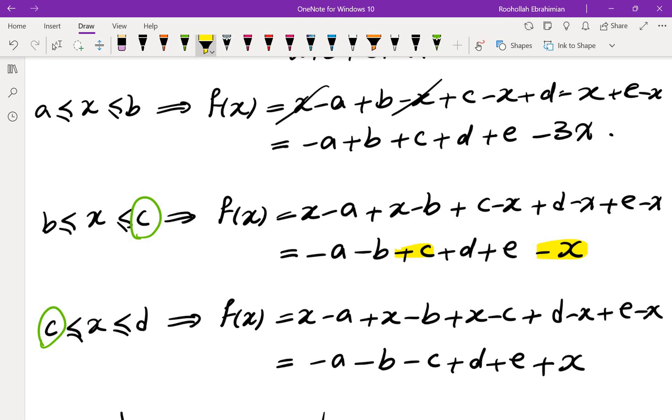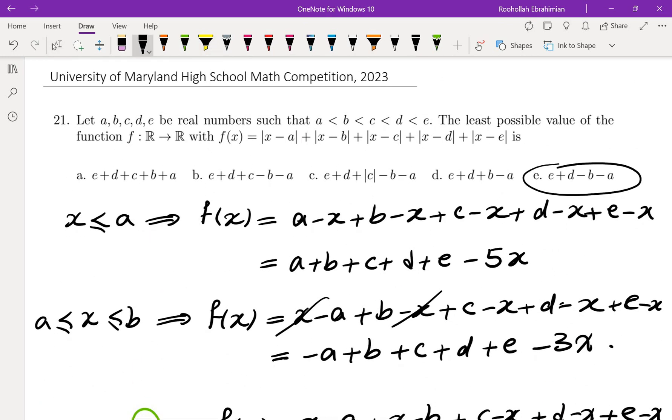C and negative C cancel, and the answer is minus A minus B, plus D, plus E. So the answer is E.